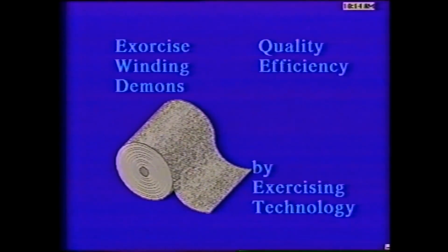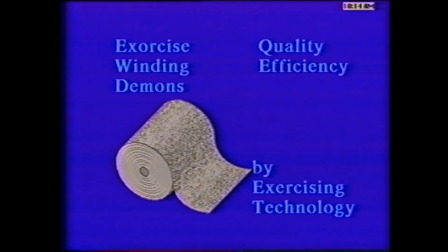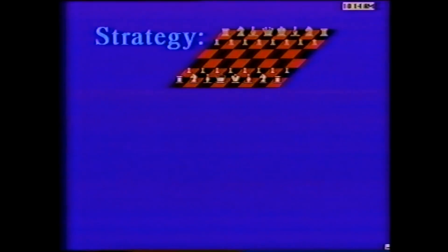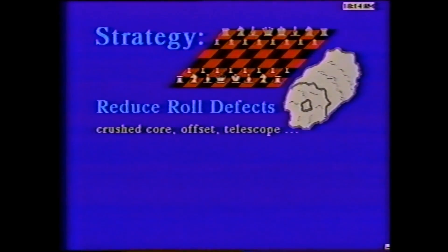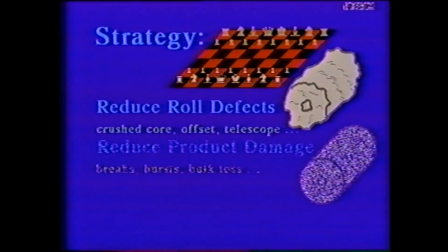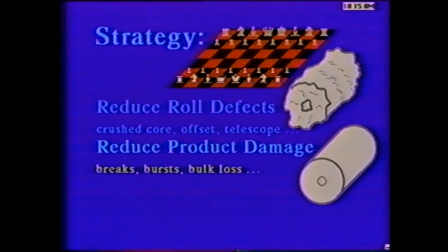With the science of winding, we can determine the boundaries of winding operation defined by either physical laws or the limitations of material or machine. Within these bounds of material, machine, and physics, we are free to design the wound roll for maximum quality. This includes reducing or eliminating roll defects such as crushed cores, offsets, and telescopes, as well as reducing product damage such as breaks in the material and loss of bulk due to winding at excessive tension.